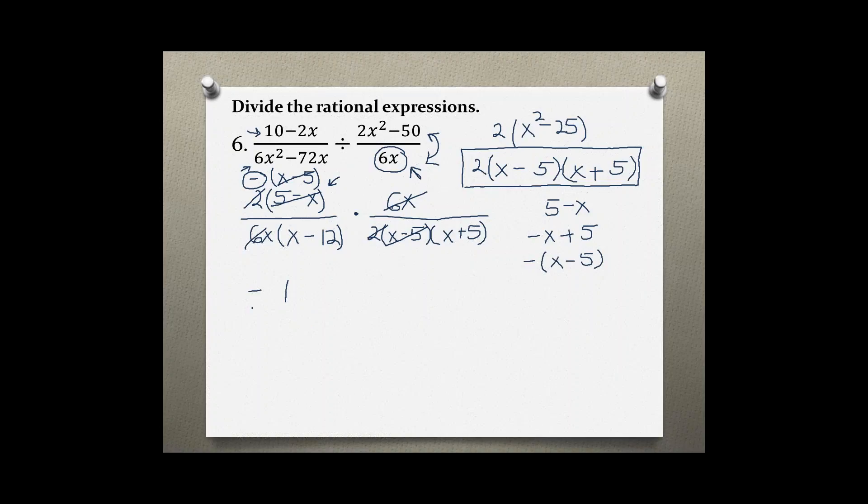And in the bottom we are left with x minus 12 and x plus 5. We could foil them back together, but it is not necessary. If you look in the back of your book, this will be the correct answer. Negative 1 over x minus 12 in parentheses and x plus 5 in parentheses. Thank you.